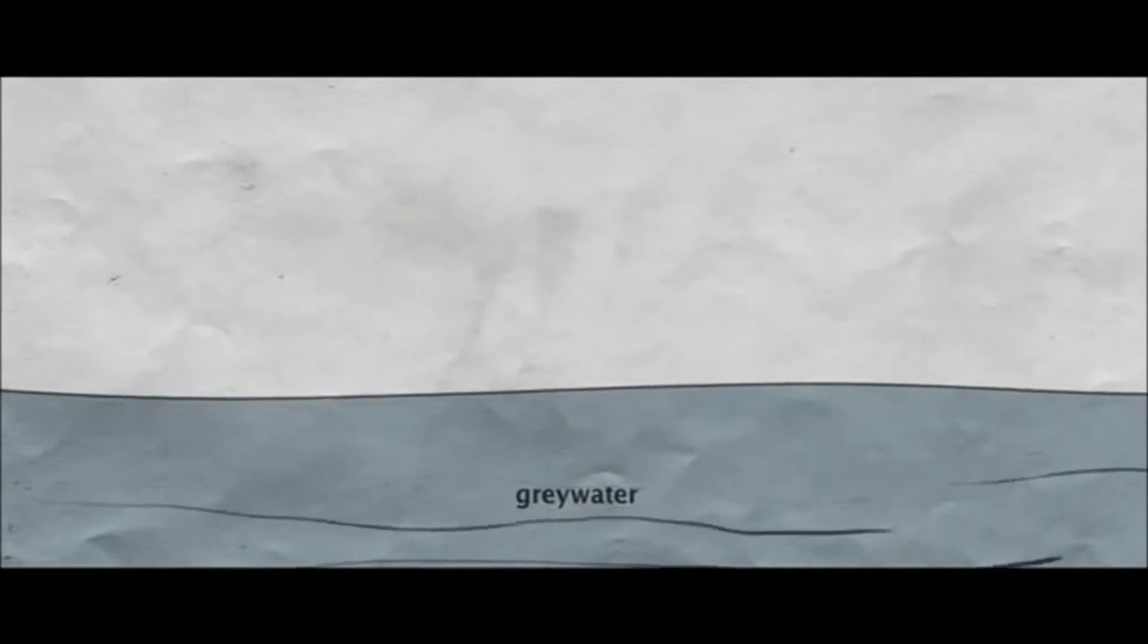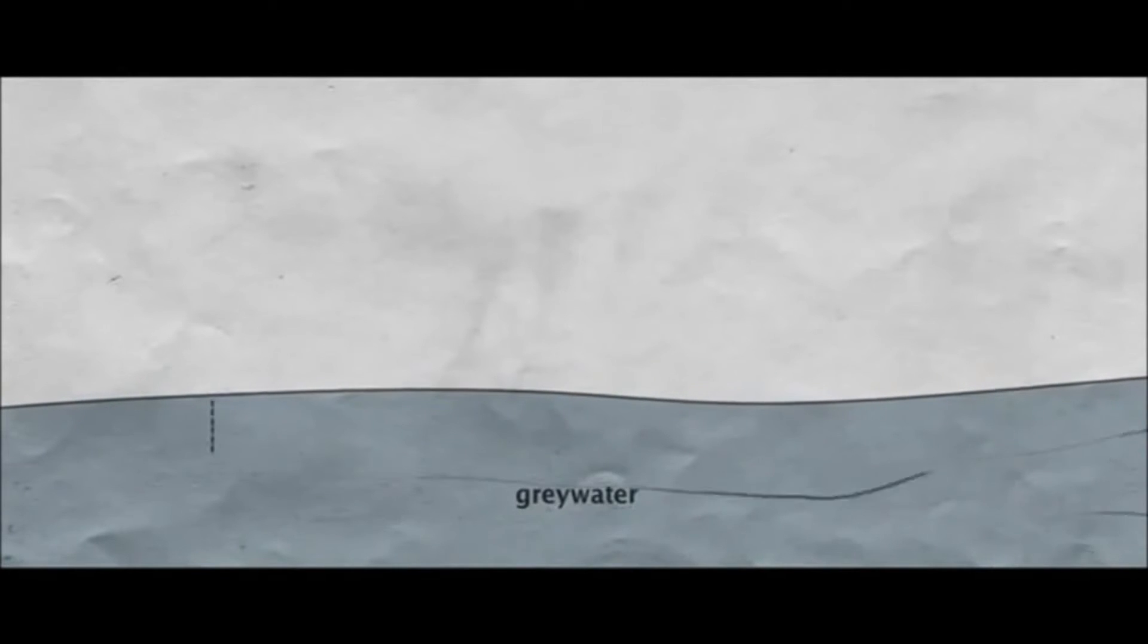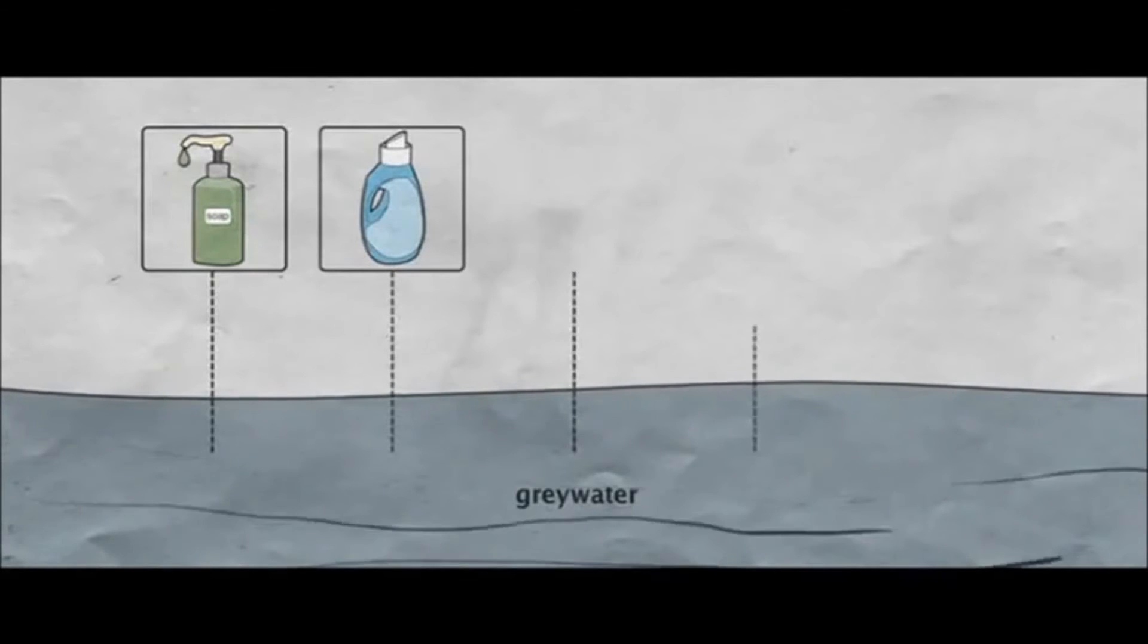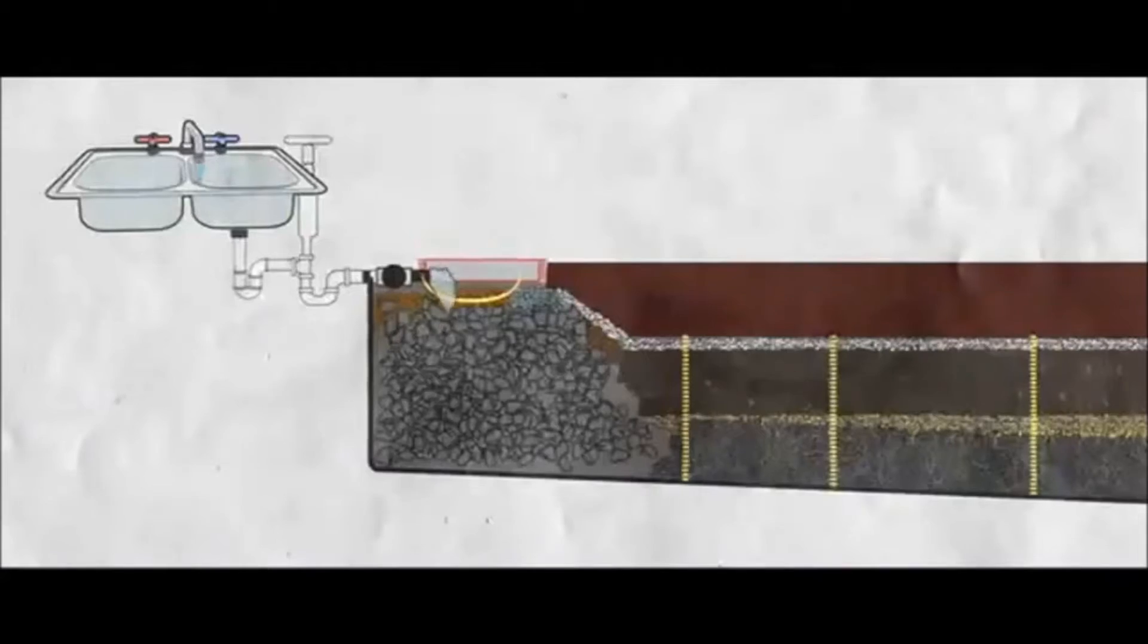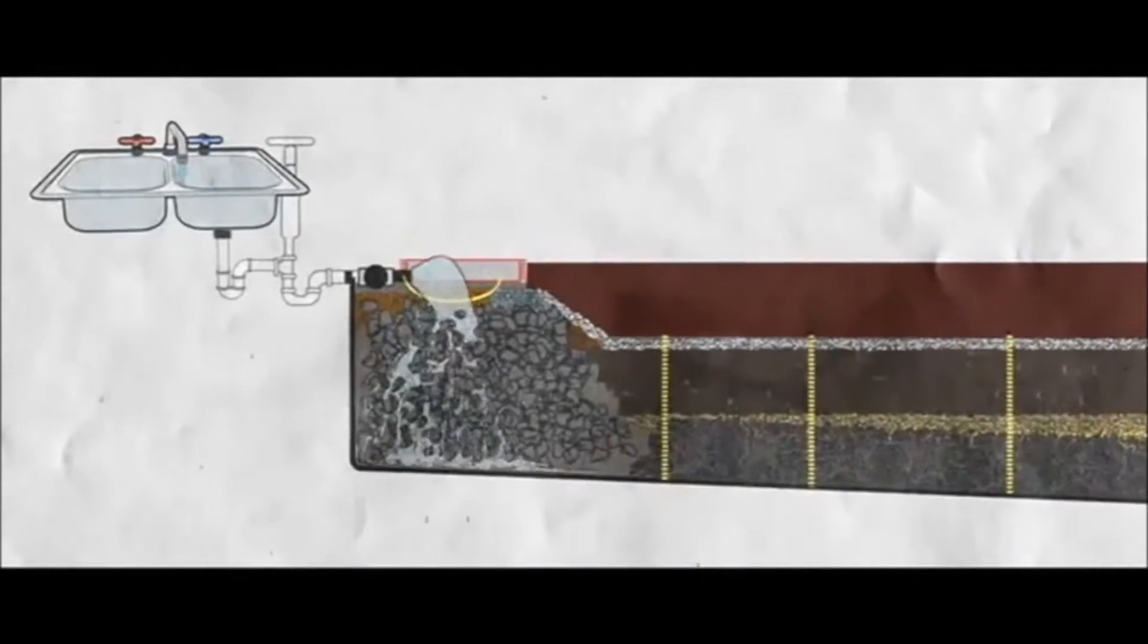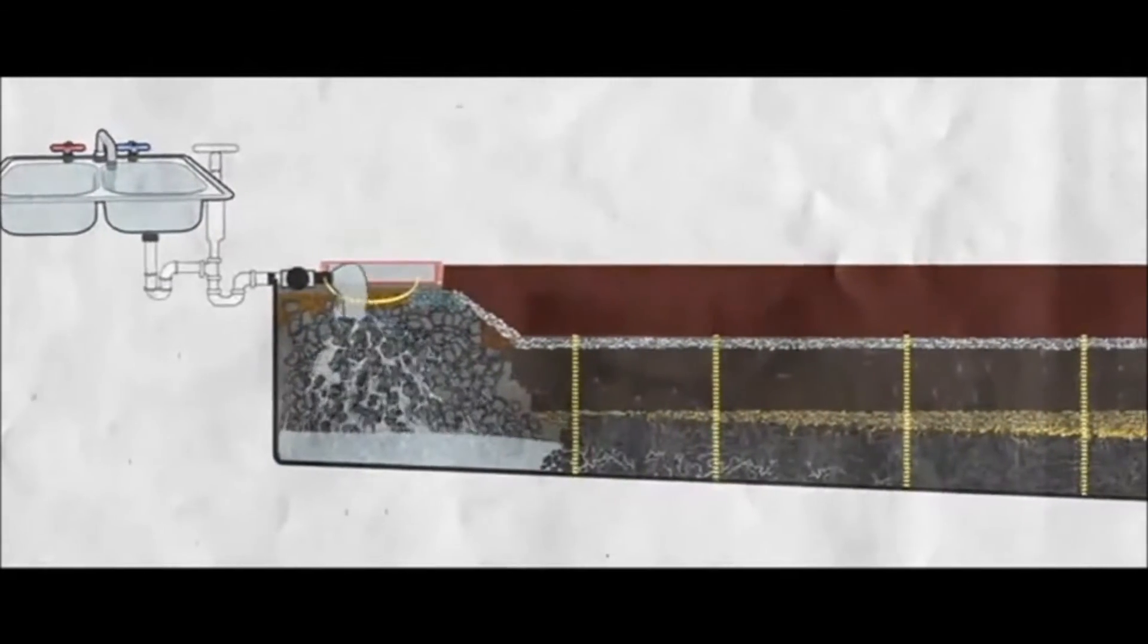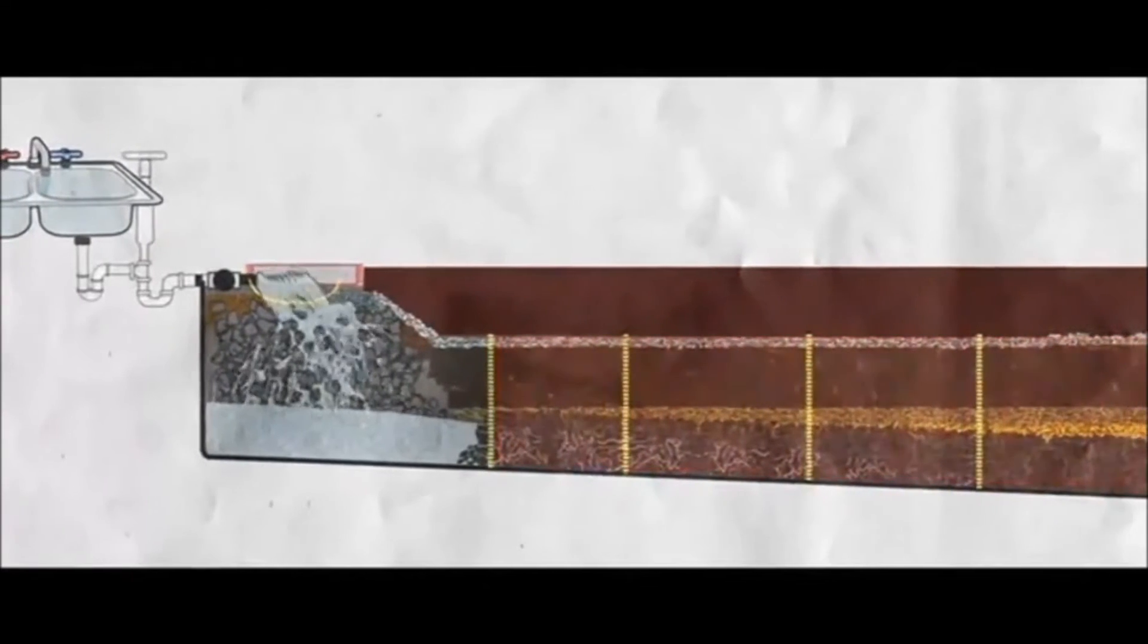Usually, grey water will contain household chemicals like soap and detergents, and easily degradable organic materials like fat and oil. Consequently, grey water is channeled through a filter or digester for grease and particles, then sent into an indoor deep rubber-lined botanical cell.